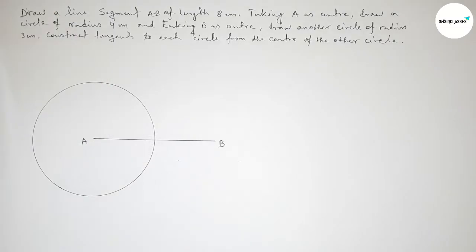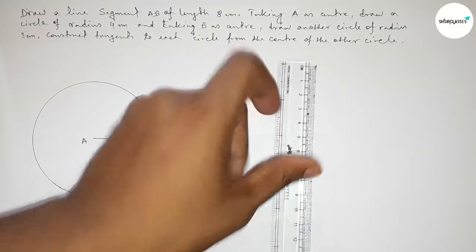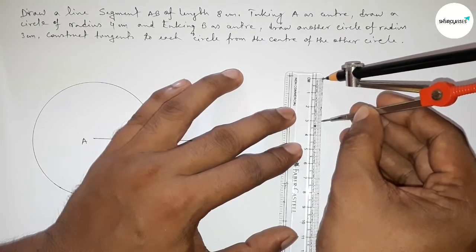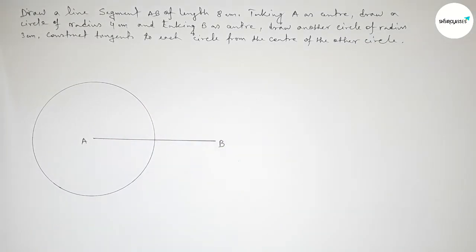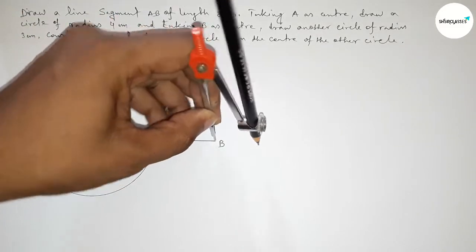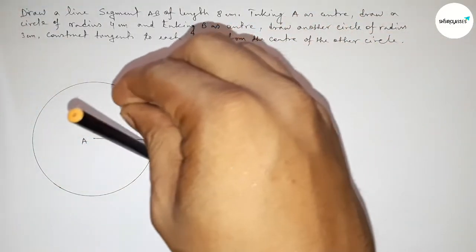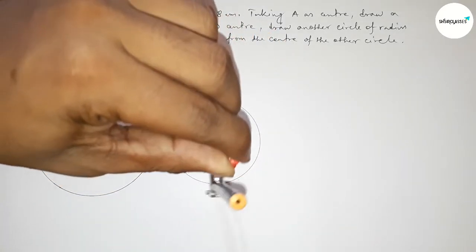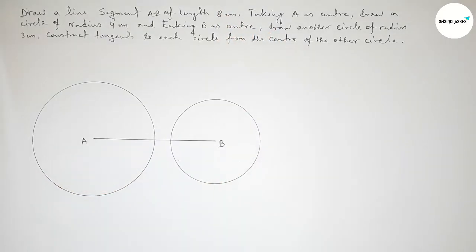Next, we draw a circle on point B with radius 3 centimeters. Using the compass and taking 3 centimeters, putting the compass on point B and drawing another circle of radius 3 centimeters.